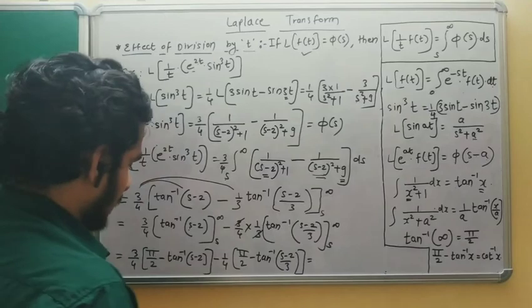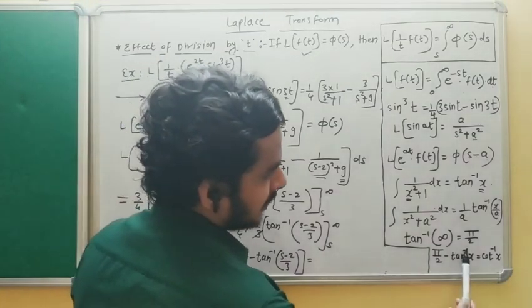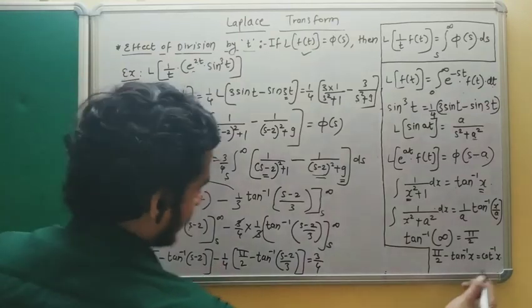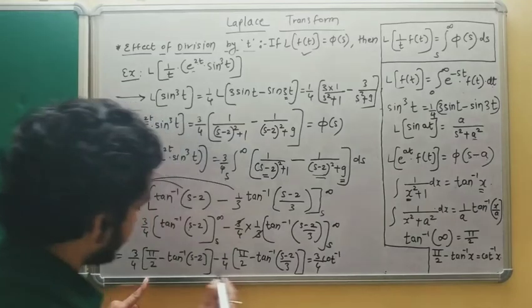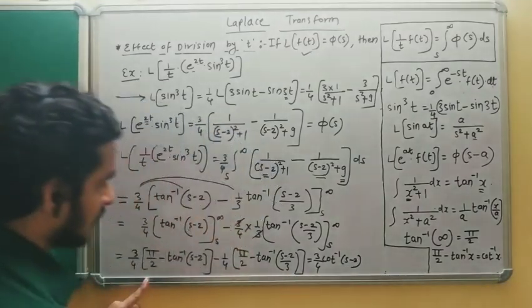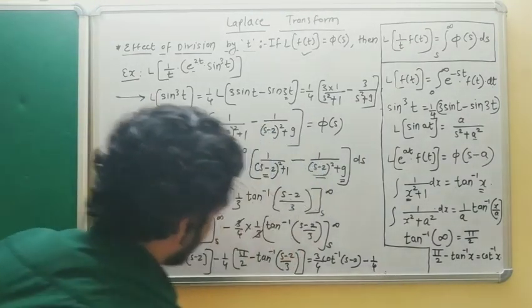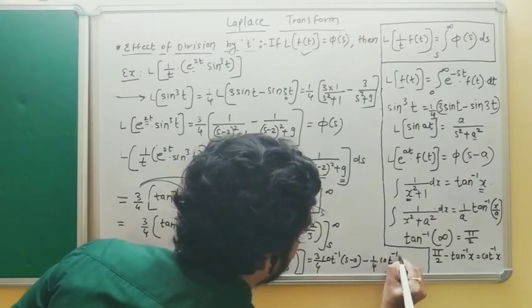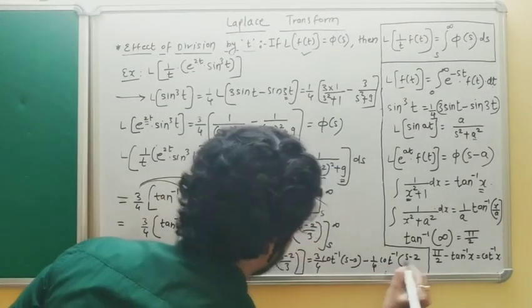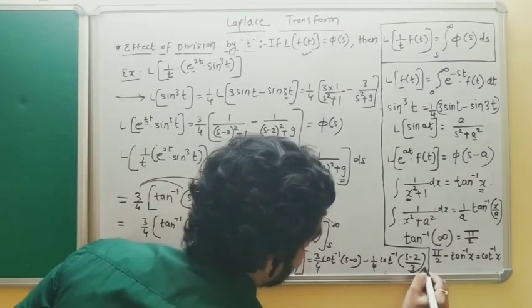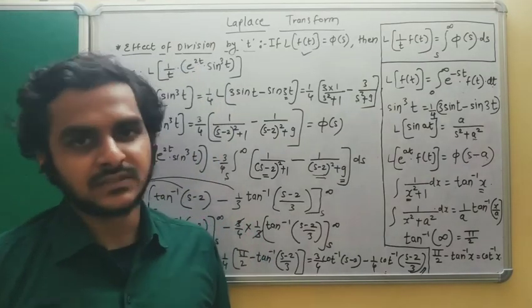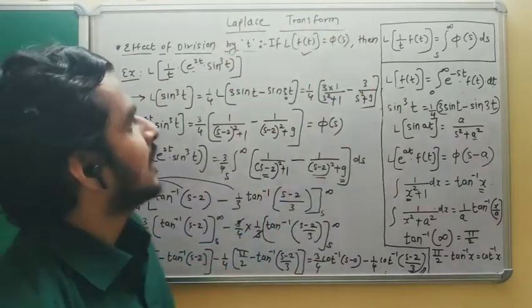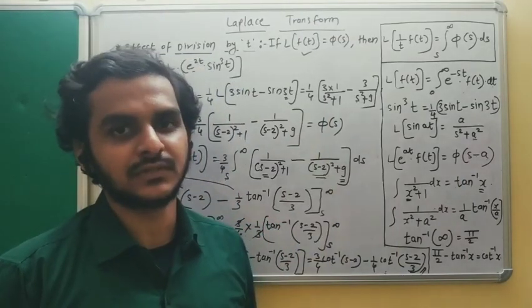Using the trigonometric identity π/2 − tan⁻¹(x) = cot⁻¹(x), the final answer is: (3/4)·cot⁻¹(s−2) − (1/4)·cot⁻¹((s−2)/3). This completes today's lecture on numerical problems based on the property of effect of division by t. We will continue the Laplace transform chapter in the next videos. Thank you for watching.